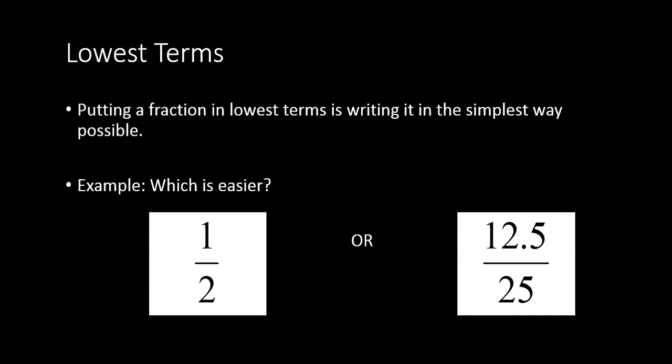For example, which is easier, one-half, or twelve-point-five out of twenty-five? Which one looks easier? I think one-half is pretty clear, one out of two, and that is the simplest form.